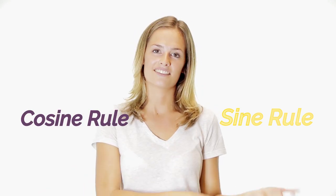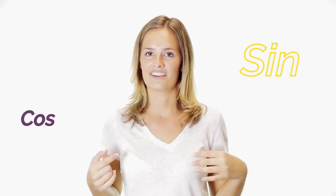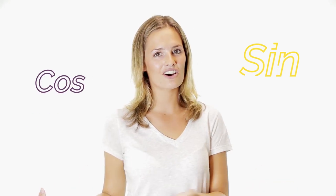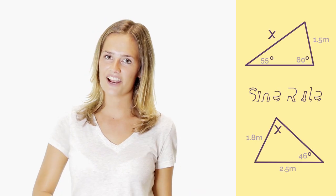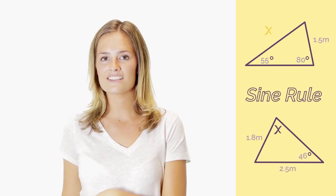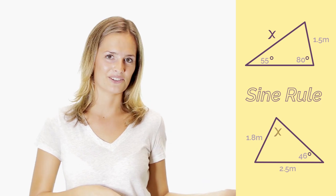You've probably already guessed the sine rule involves sine and the cosine rule involves cosine. In this video we're going to look at how to use the sine rule to find missing sides or missing angles.